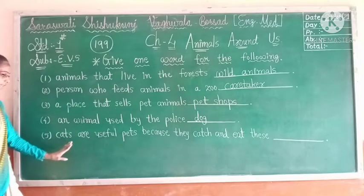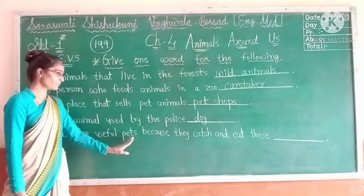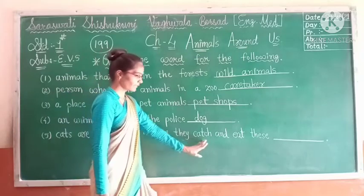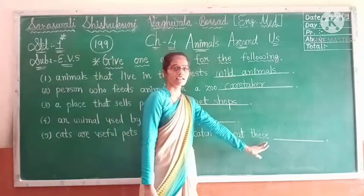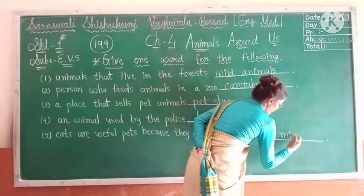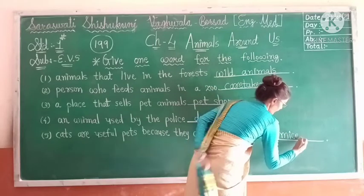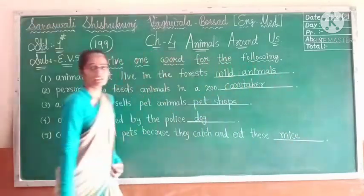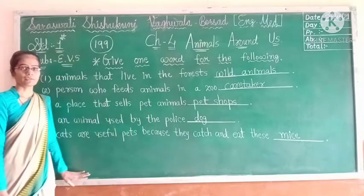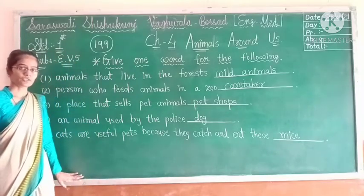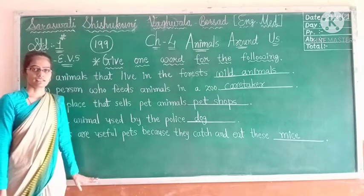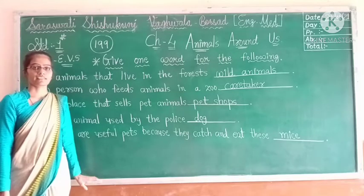Number five: Cats are useful pets because they catch and eat mice. Cats eat mice — that is why cats are useful pets. So this is how all of you have to write the answers in your textbook. All of you have to learn this exercise. Thank you.